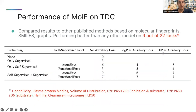We compare our results to other methods that use fingerprints, SMILES, and graphs. Mole performed better than any other method on 9 out of the 22 tasks in the Therapeutic Data Commons benchmark. In particular, the best results were obtained when using both self-supervised and supervised pre-training, suggesting that the two-step strategy is needed to obtain the best results.